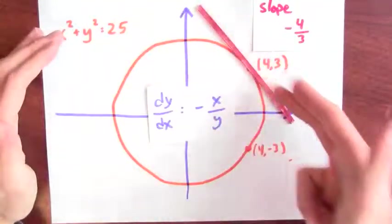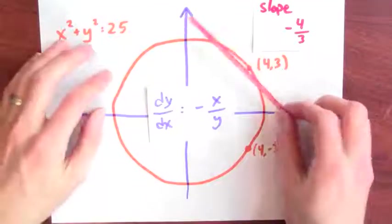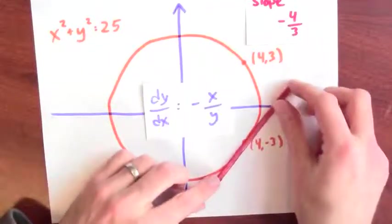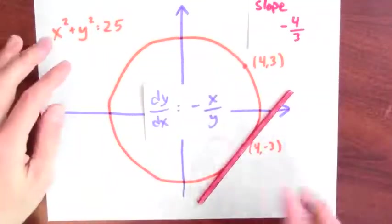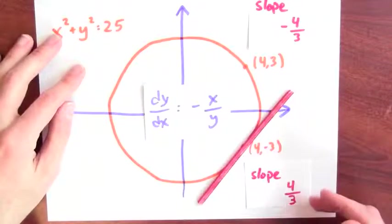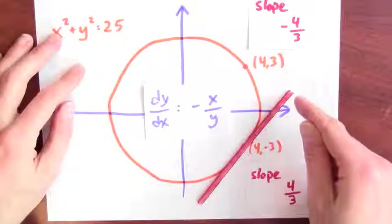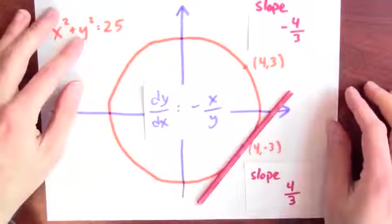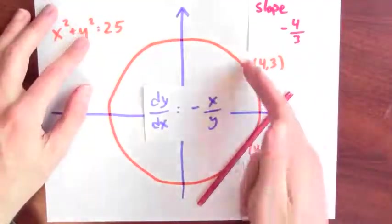And yeah, that line is going down. The slope's negative. What's the slope of the tangent line to the curve at the point 4, negative 3? Same equation tells us that the slope there is 4 thirds. And yeah, this line's going up. The slope of the tangent line is depending on more than just the x coordinate.